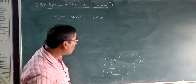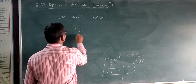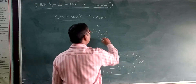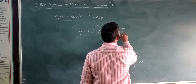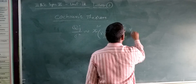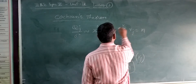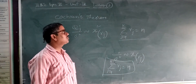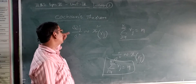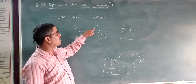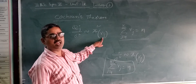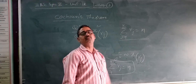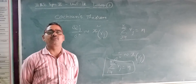Cochran's theorem: QJ divided by sigma squared follows a chi-square distribution with degrees of freedom RJ, if and only if summation J equals 1 to K of RJ equals N. This is Cochran's theorem. Thank you.